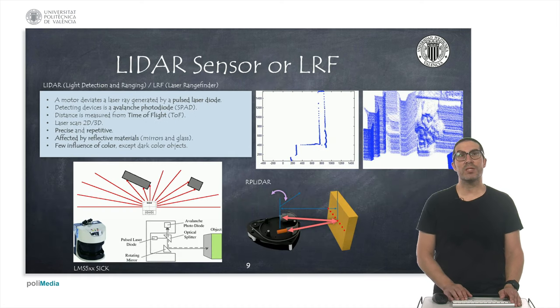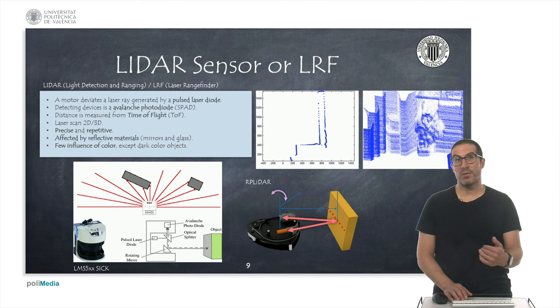Then we have the LiDAR sensor. It's a laser sensor that emits a pulsed light and also has a SPAD diode, it's a photodetector that detects the return of the light ray, and it's based also on the time of flight as we saw before.